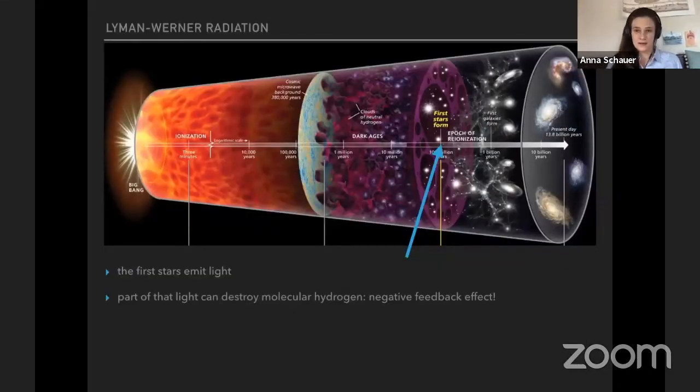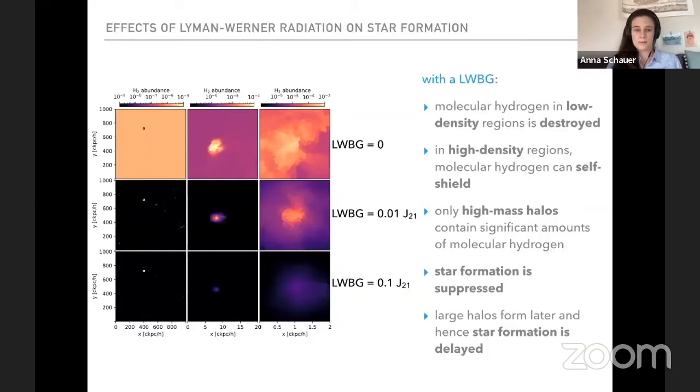We now need to take into account also a second effect, the so-called Lyman-Werner radiation. That's a feedback effect. The first stars emit radiation and they also emit it in the wavelength and the energy range of 11.2 to 13.6 eV, which is the range that destroys molecular hydrogen. And when we don't have molecular hydrogen, we lose our coolant.